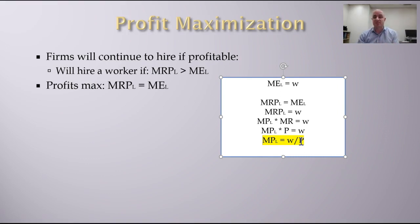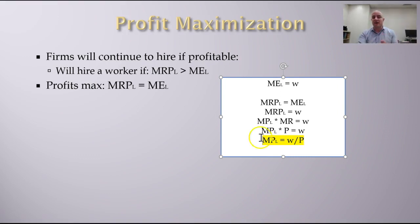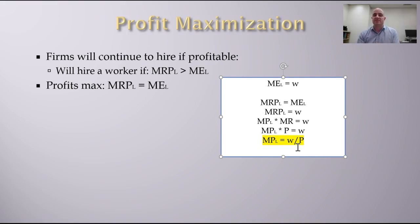This is the profit-maximizing level of output: where the marginal product of labor equals W/P, known as the real wage. The real wage is the wage adjusted for prices — it represents buying power or purchasing power. The marginal product is in terms of output, and the real wage is essentially unit-free, not in dollars but in terms of units.